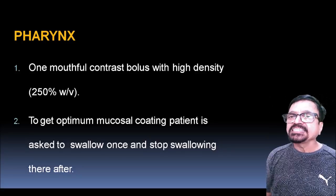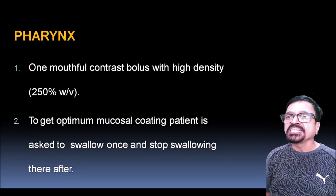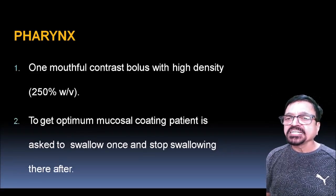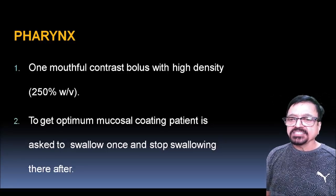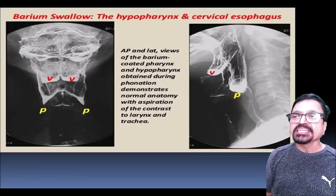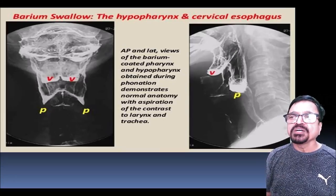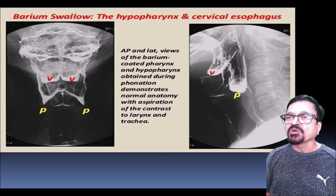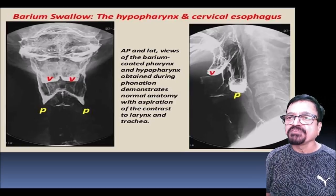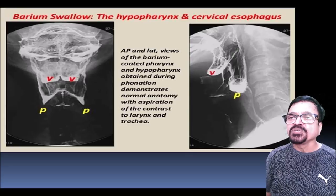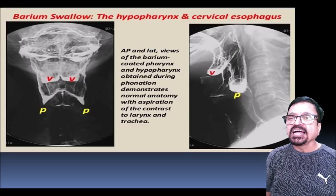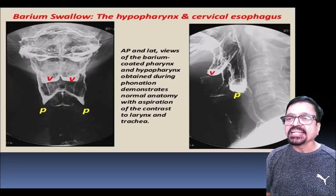For pharynx imaging, high density barium (250% weight by volume) is used as a mouthful. The patient swallows once and stops swallowing. This nicely outlines the valleculae and pyriform sinuses with double coating. AP and lateral views are obtained with barium-coated pharynx and hypopharynx during phonation, demonstrating normal anatomy including any aspiration of contrast to the larynx and trachea.